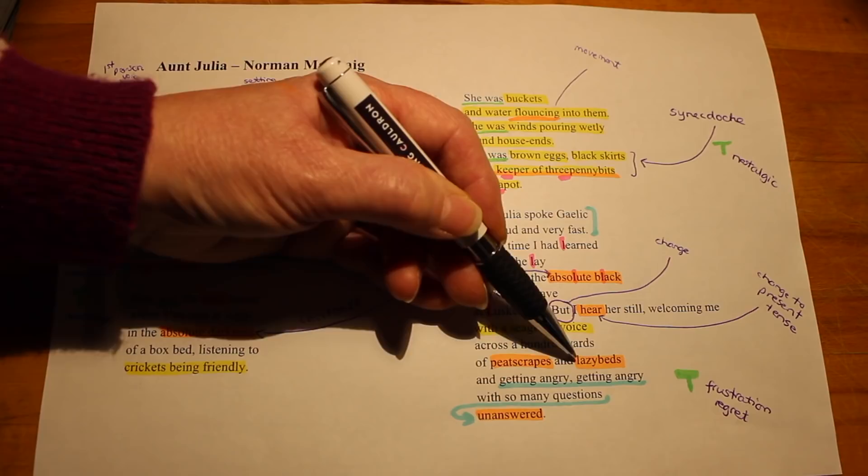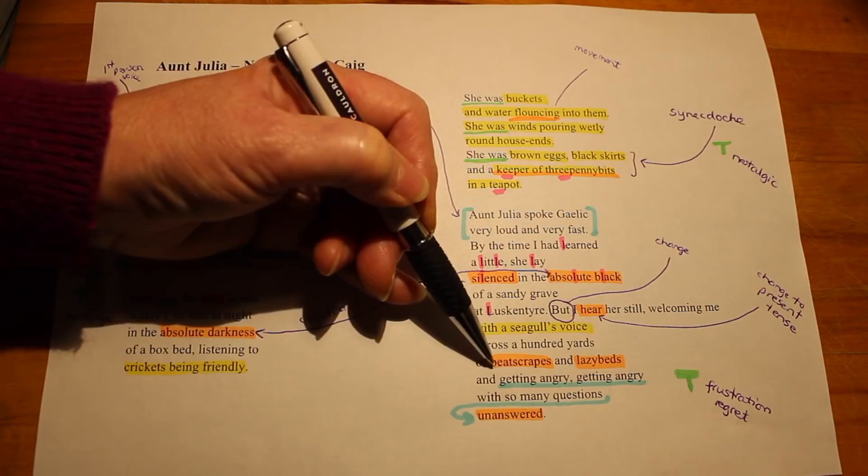And lazy beds were another type of bed that they cut into the ground. This was where they would lay potatoes down and then cover them with seaweed, for example, rather than earth. And that was why it was lazy. They didn't dig the normal drills that potato farmers would dig. And there they would grow vegetables in these lazy beds, very much harking back to the crofting lifestyle that Aunt Julia led.